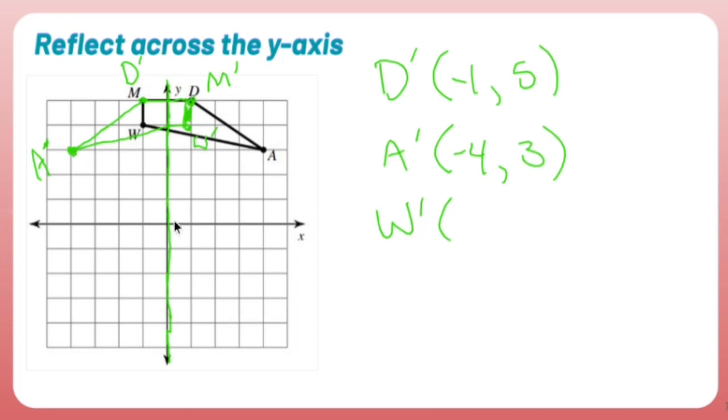I'm going to put W next. Start at the origin, go right one, up one, two, three, four. So right one, up four is W prime. And M, I go right one, up one, two, three, four, five. Right one, up five. And that's reflecting.